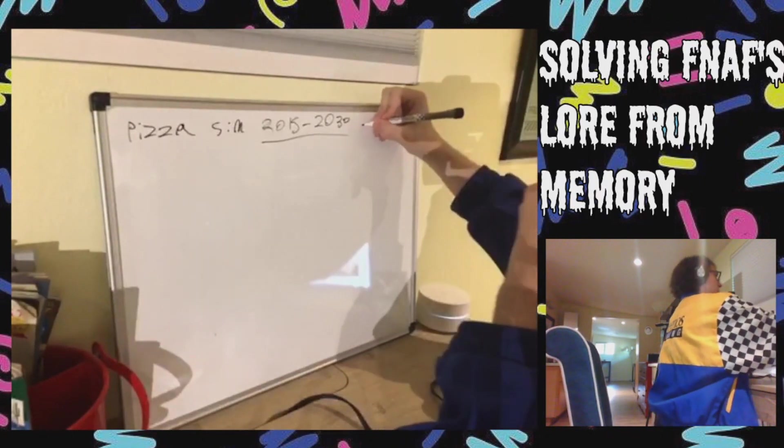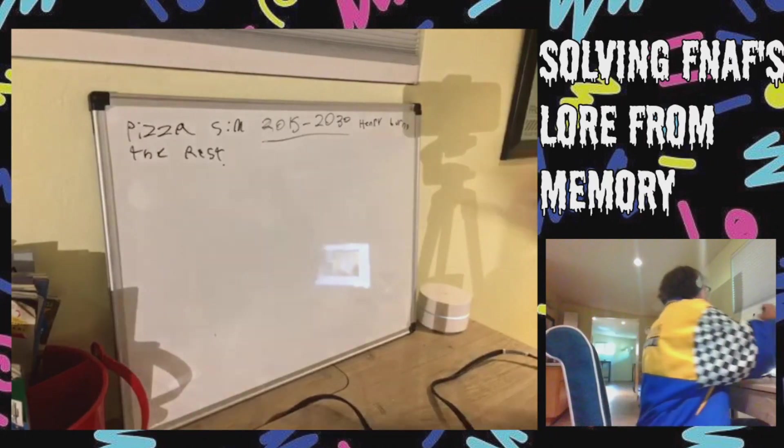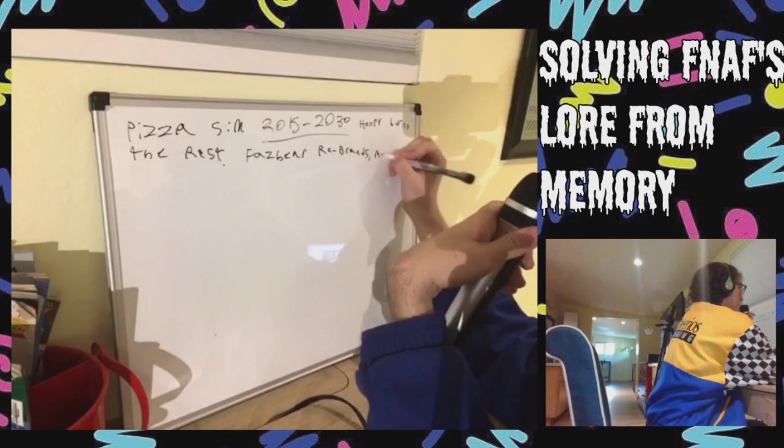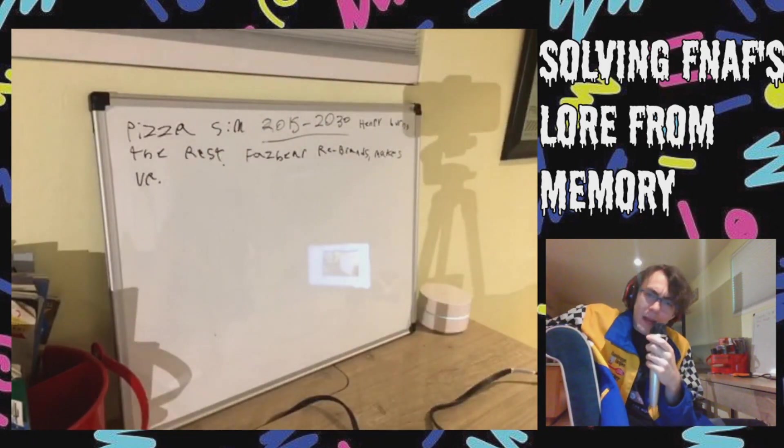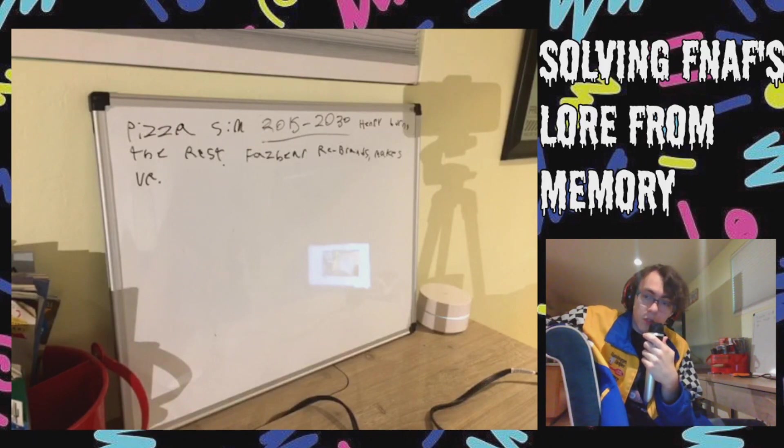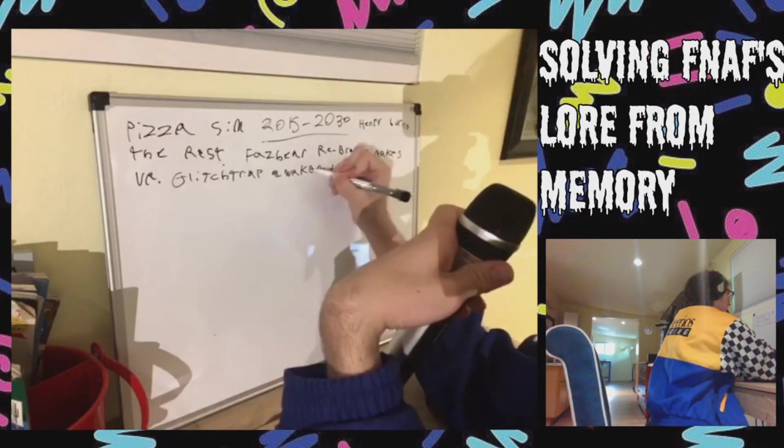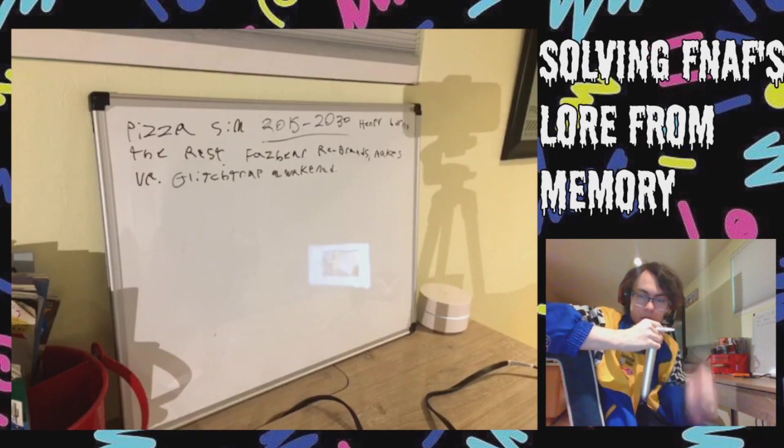Then in Pizza Sim, Pizza Sim is like 2030 or something? Pizza Sim happens. Everyone burns including Henry. But that doesn't stop it. Because the Fazbear Corporation is still going. Because now all the rumors have happened. Fazbear's trying to rebrand. Makes VR game. But little did they know, they took microchips from inside Springtrap. I guess the lore is so stupid at this point. Now Glitchtrap has been awakened.